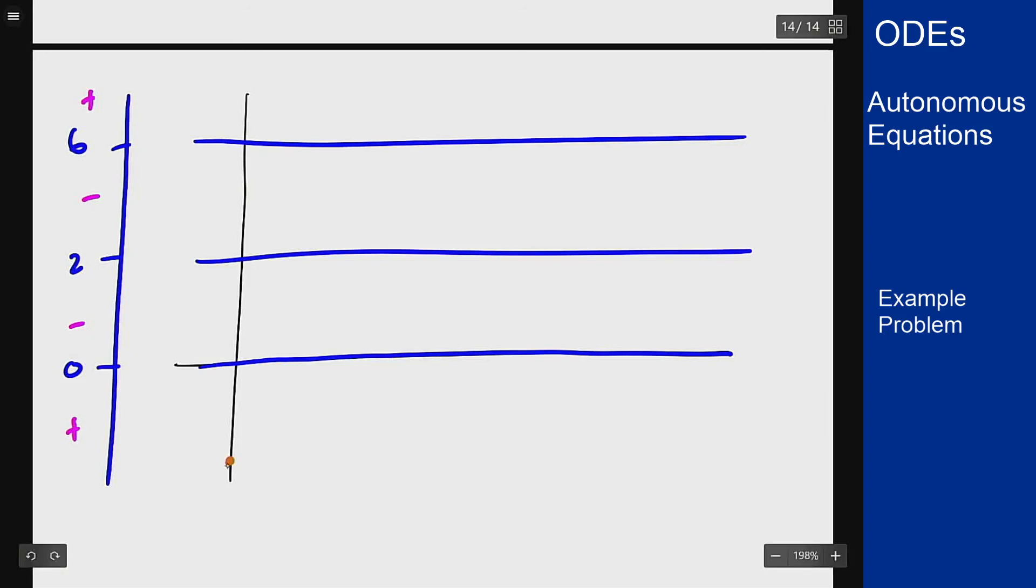Down here, it's increasing, so it's going to come up like this. Here, it is decreasing. It's going to come down like this. If I start higher up, I probably have a little bit of a curve there first, and then I flatten out.